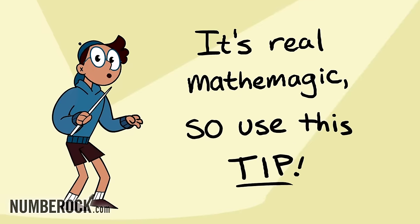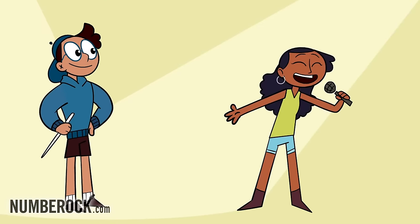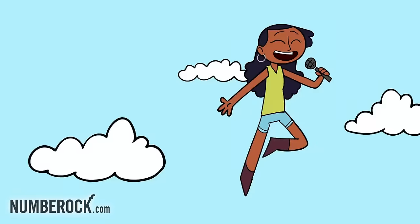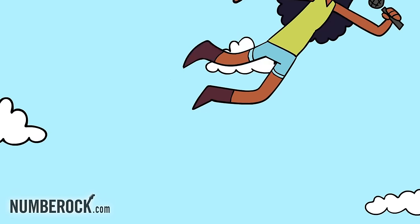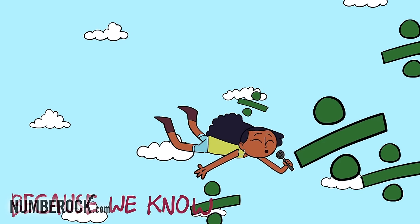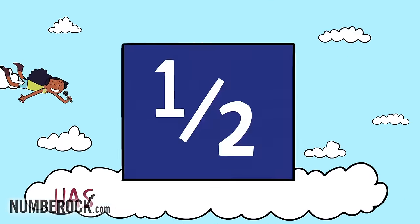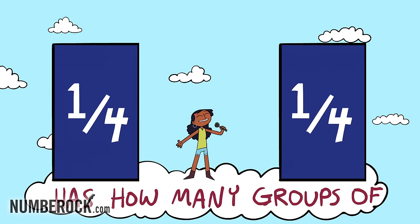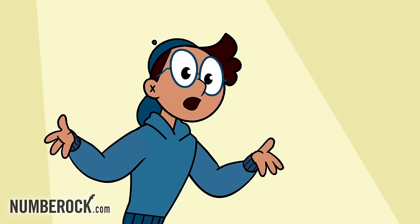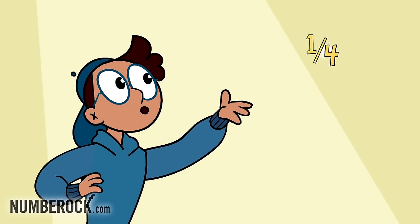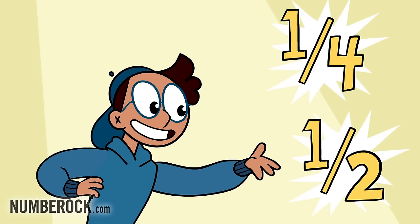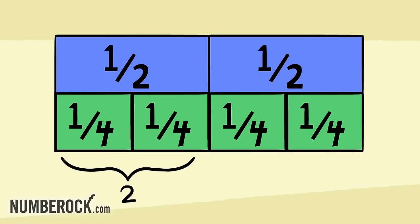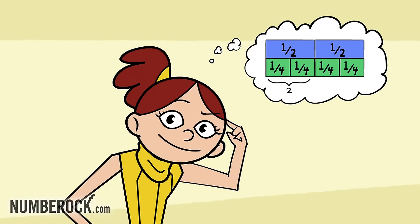We understand with these problems we love, because we know division needs to show how many groups there are. Let's explore that thought: how many groups of fourths does one-half have? Two fourths fit into one-half perfectly, and we found the quotient mentally.